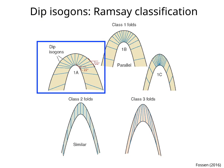Class 1A folds have convergent dip isagons. The curvature of the outer arc is lower than the curvature of the inner arc. The smallest true thickness and vertical thickness is at the hinge.